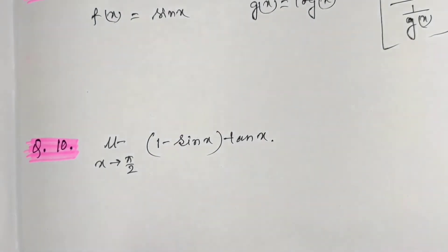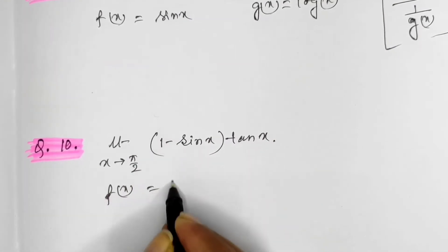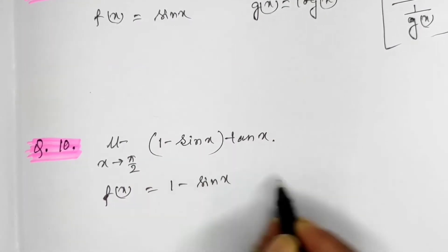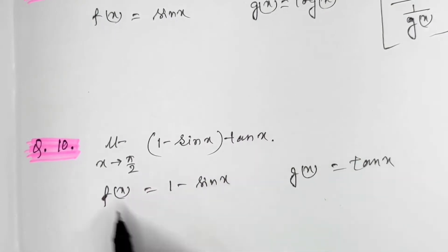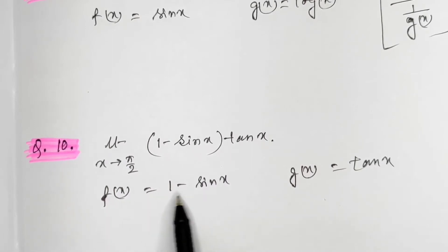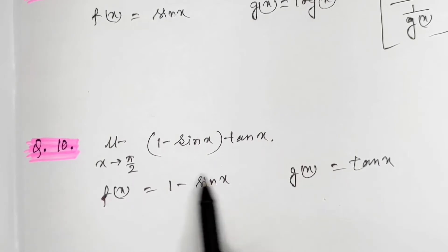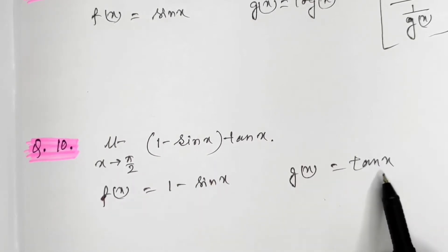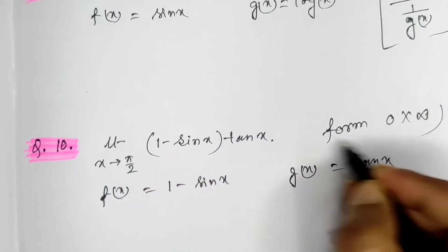One more example: f(x) = 1 − sin x and g(x) = tan x, with limiting value π/2. Substituting: 1 − sin(π/2) = 1 − 1 = 0, and tan(π/2) = ∞. So this is also in the form of 0 into infinity. We rewrite it in the form of 0 by 0 and proceed to solve.